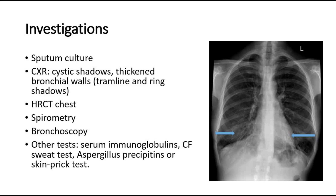We should also perform HRCT of the chest to assess the extent and distribution of the disease. Spirometry can be done and often shows an obstructive pattern, also assessing reversibility. Bronchoscopy is used to locate the site of haemoptysis if present, to exclude obstruction, and to obtain samples for culture, along with other listed tests.